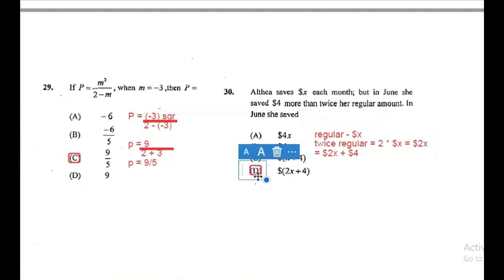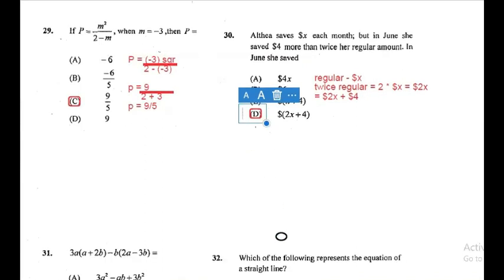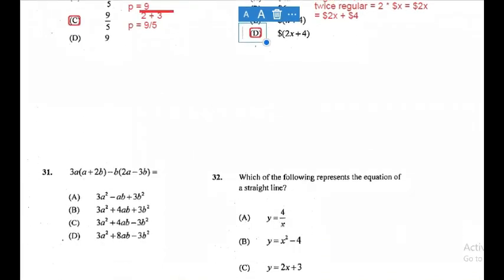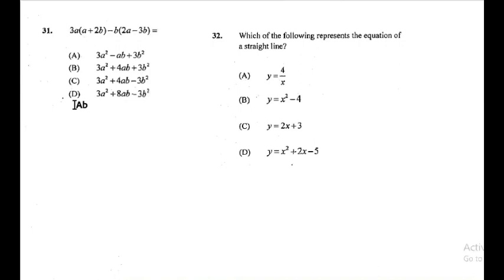It's all about reading, interpreting, and understanding what the question is saying, and writing down the steps as you go to ensure you have the right answer. Question 31: 3a multiplied by the first bracket, and negative b multiplied by the second bracket. We'll be expanding the brackets.